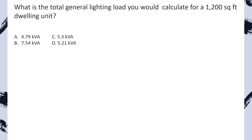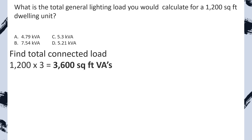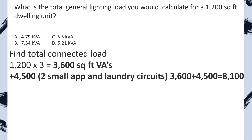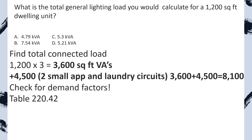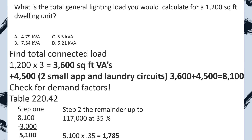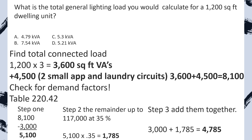What is the total general lighting load you would calculate for a 1,200 square foot dwelling unit? Anytime it asks for the total, you're always going to be applying a demand factor if there is one, and in every one of these calculations you're going to have the two small appliance and one laundry circuit. Step one: find the total connected load. We take 1,200 square feet multiplied by three VAs per square foot, which gives us 3,600 VAs. Now we tack on our 4,500 for our two small appliance and one laundry circuit: 3,600 plus 4,500 equals 8,100. Now we check for demand factors and head to table 220.42. Step one: minus 3,000 and take it at 100%. Step two: multiply the remainder by 0.35. Add them back together and we end up with a new reduced load of 4,785 VAs. We select A. Great job.